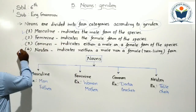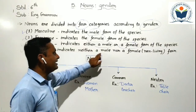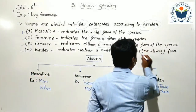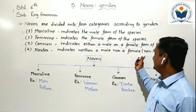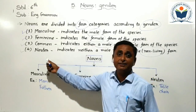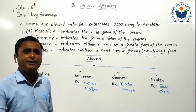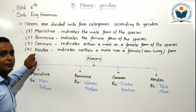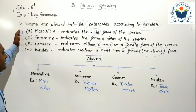Next is neuter gender. Neuter gender indicates neither a male nor a female — meaning non-living things. All non-living things come inside neuter gender. Can you understand? Four types of gender.